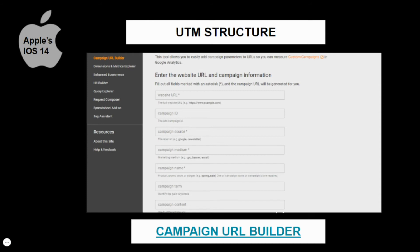Now let's talk about UTM structure. I talked about UTMs before as a way for you to structure your links so you can track them. To get the most out of Google Analytics, it's best to have a consistent naming strategy. Simply put, if you don't keep a consistent naming strategy, the more campaigns you run and the more links you make, it'll become harder to keep them organized and understand them. That will confuse and overwhelm you and take way more time than needed. So if you want to keep your sanity, make sure you organize your UTM structures.